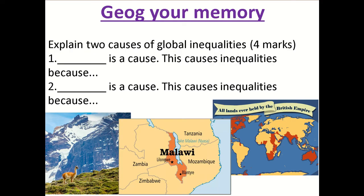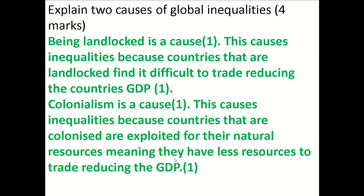You can also talk about topography. In mountainous regions it's more difficult to develop because you can't build crops or roads on mountainous environments, which means it's more difficult to trade. You don't have any products to trade, which will reduce the country's GDP. You could also mention that as altitude increases, temperature decreases, meaning crops do not grow as readily, further reducing GDP.